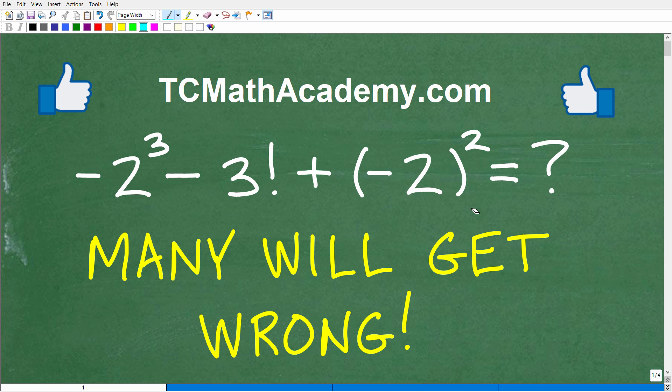The second reason why people won't get this problem right is because they don't understand this notation in mathematics, this little exclamation mark. Let me go ahead and read the prompt to you. It is negative two cubed minus, now this three with the exclamation mark, is not saying three really loud. It's not negative two cubed minus three screaming at plus parentheses negative two parentheses squared.